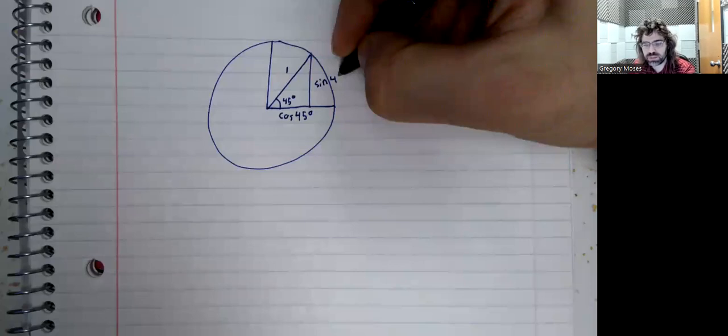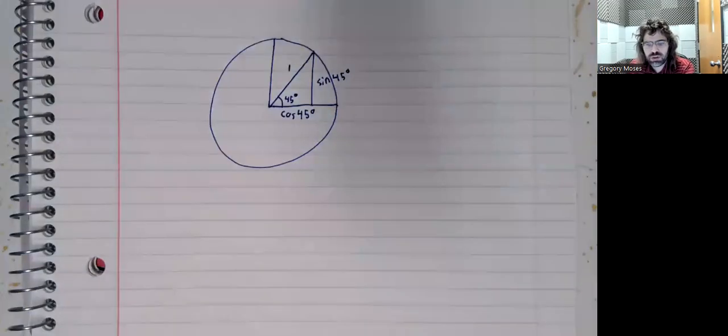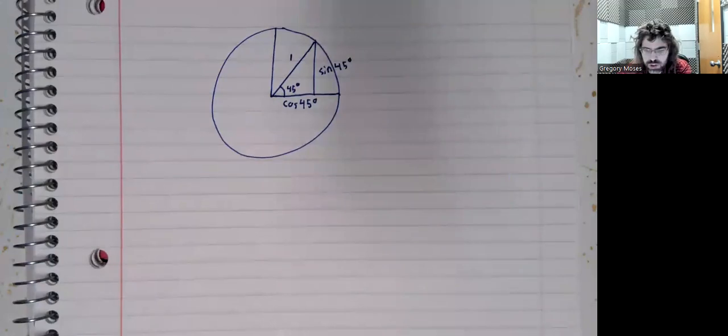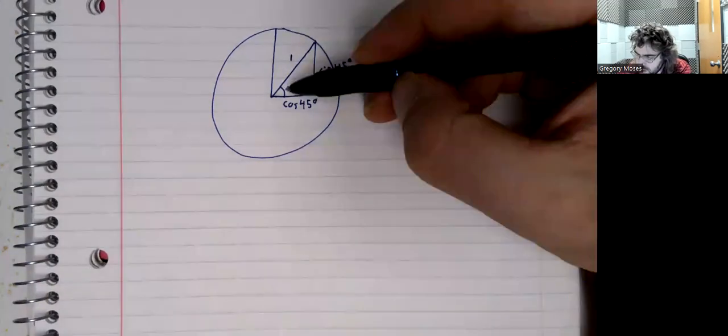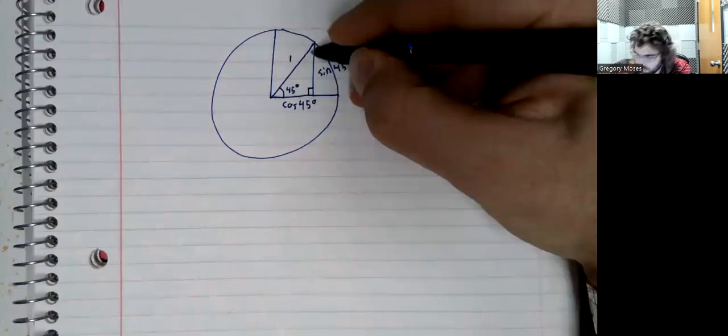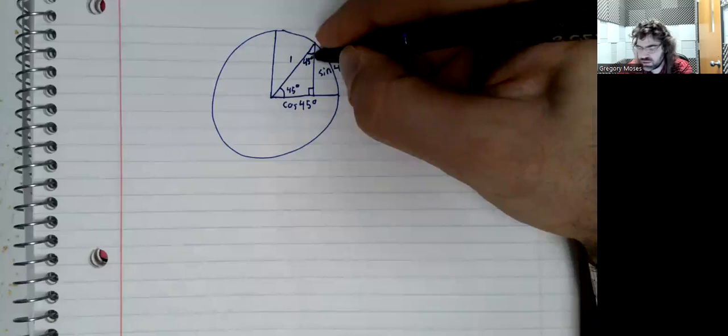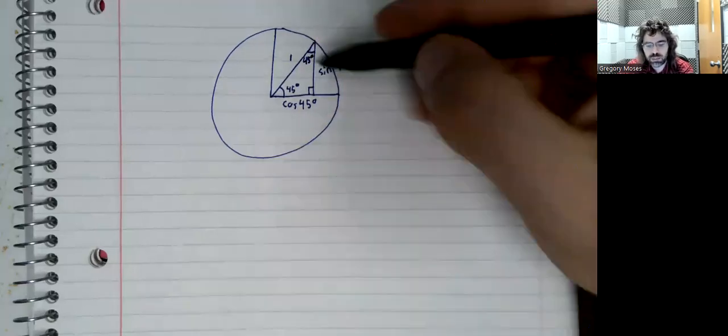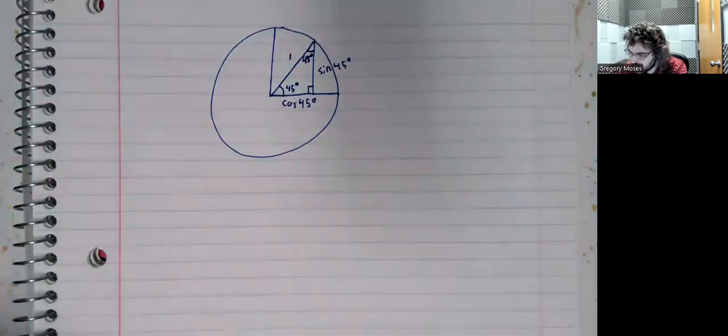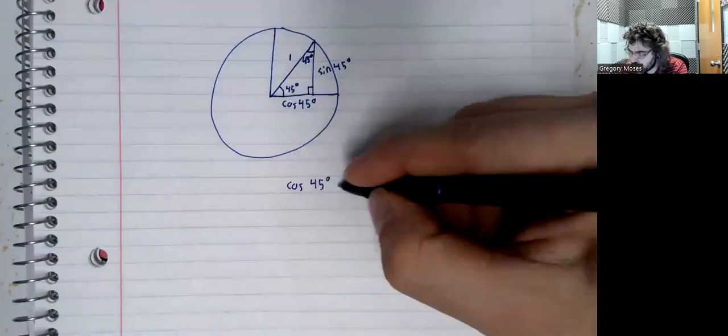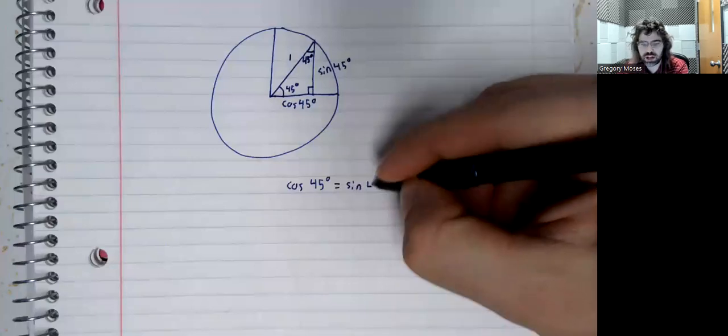Here's the sine of 45 degrees. And the key observation here from geometry is that if this angle is 45 degrees and this angle is 90, this angle is also 45 degrees. And this side and this side are the same. So we can write that the cosine of 45 degrees equals the sine of 45 degrees. And then we can say,